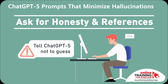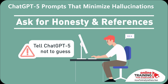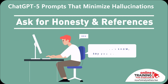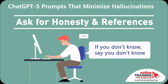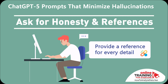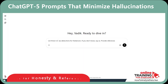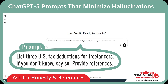Another trick you can use is to ask ChatGPT for honesty and references. You can specifically tell ChatGPT 5 not to guess. For example, to every prompt you can add: "If you don't know, say you don't know." And when accuracy matters, ask: "Provide references for every detail." Let's try this prompt: "List three U.S. tax deductions for freelancers. If you don't know, say so. Provide references."